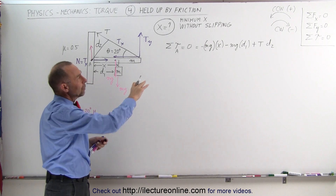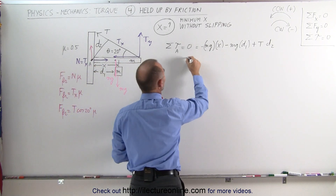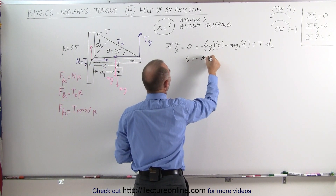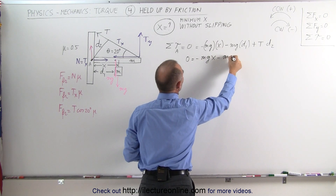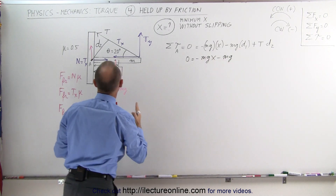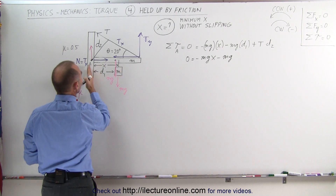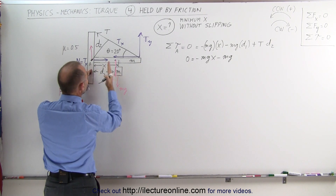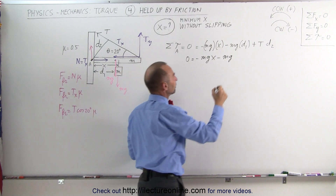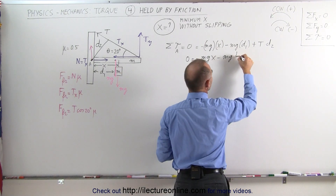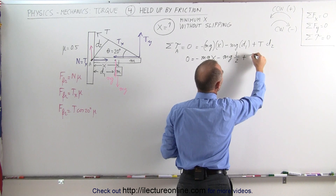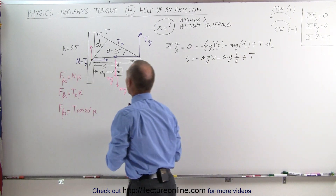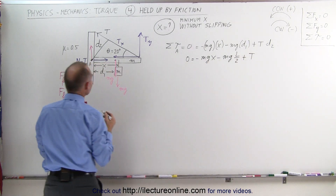Plugging in what we know: zero equals minus mg·x minus mg·D1 plus T·D2. D1 is the halfway length of the beam, so D1 equals L over 2. Substituting: zero equals minus mg·x minus mg·(L/2) plus T·D2. Now we need to determine D2.